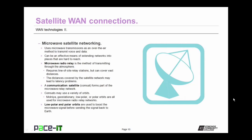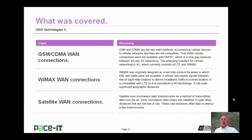Communication satellites — also known as commsats — form part of the microwave relay network. Commsats can use a variety of orbits including Molniya, geostationary, low-polar, or polar orbits. The low-polar and polar orbits are used to boost microwave signals before sending the signal back to Earth. That concludes this session on WAN Technologies, Part 2 — I briefly talked about GSM and CDMA WAN connections, then WiMAX WAN connections, and concluded with satellite WAN connections. On behalf of PaceIT, thank you for watching this session.